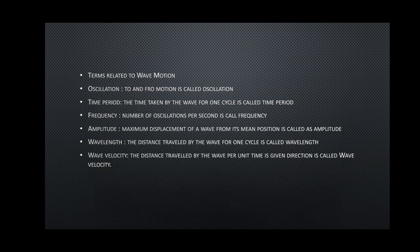The terms related to wave motion: oscillation is defined as a to-and-fro motion, also called a cycle. One up-and-down motion of a particle is one oscillation. Time period is the time taken by the wave for one cycle. There is a relation: n = 1/T. Frequency is the number of oscillations or cycles per second. If the number of cycles is more, the frequency of the wave is more. In electronics, frequency is in megahertz, gigahertz, terahertz. Amplitude is the maximum displacement of a wave from its mean position.